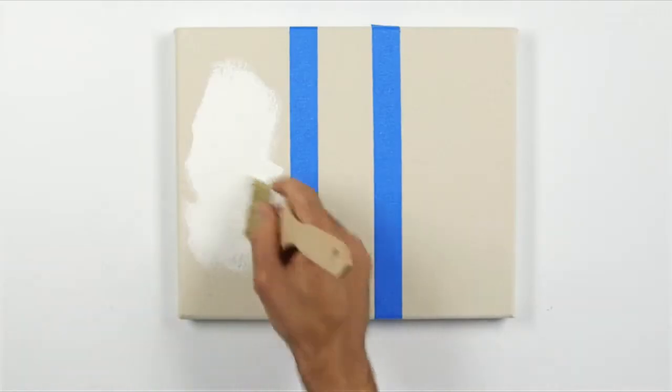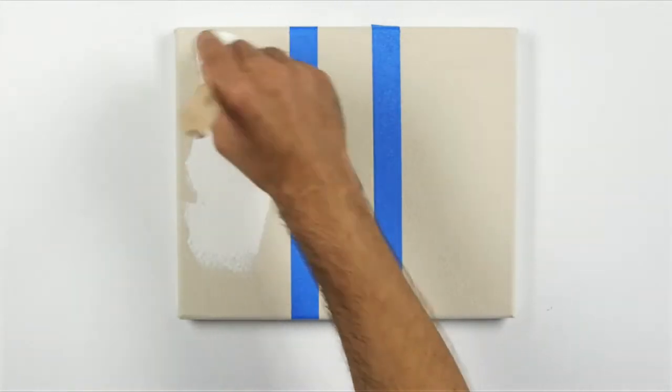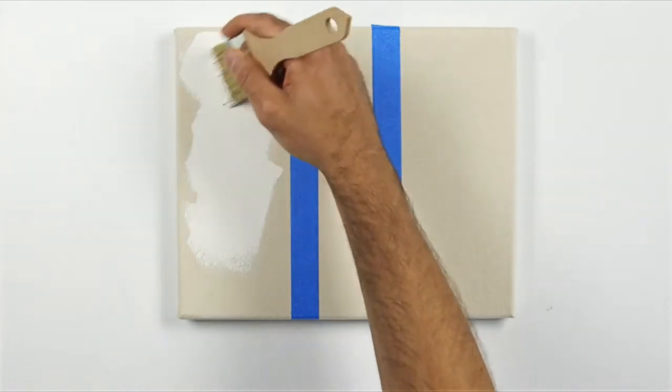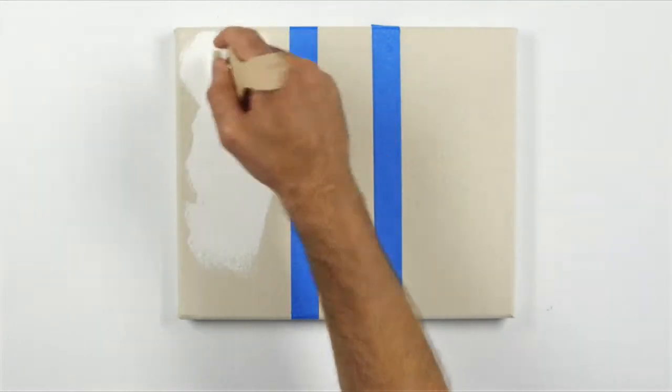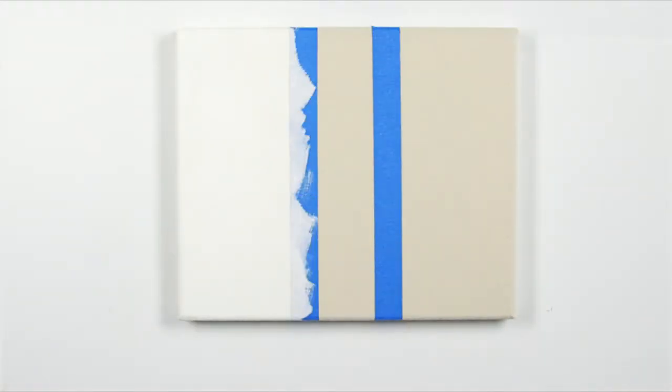I'm starting with a stiff short bristled brush to apply the gesso. For the first coat I'm using a circular motion to cover the surface completely. You can thin the first coat with a little water as it's easier to apply and it will help the gesso soak into the first layers of the canvas.